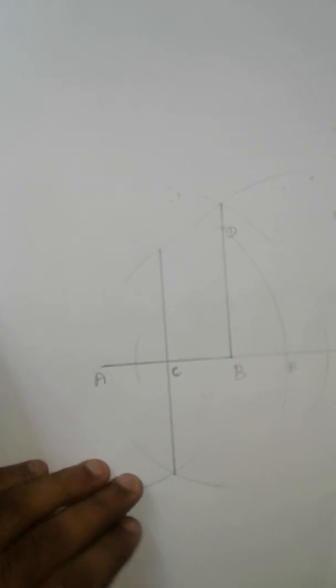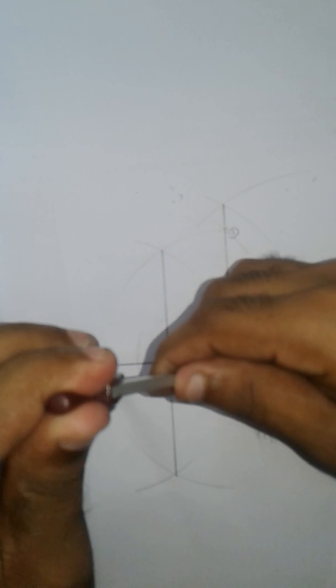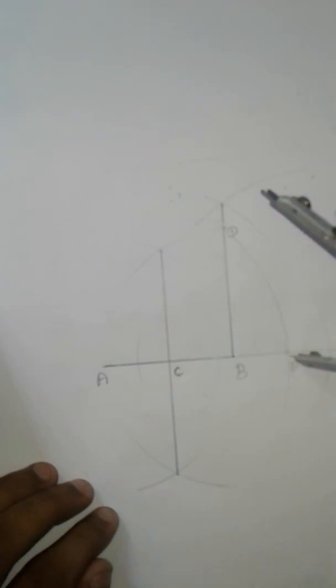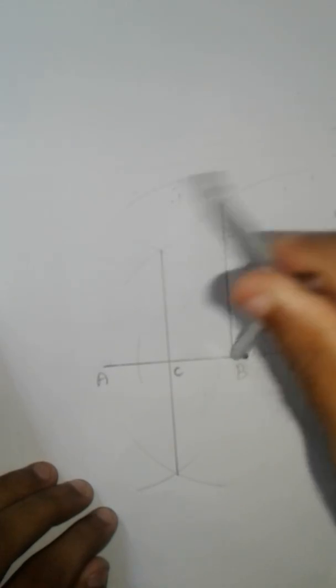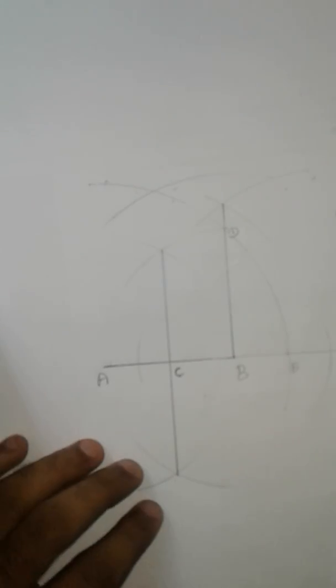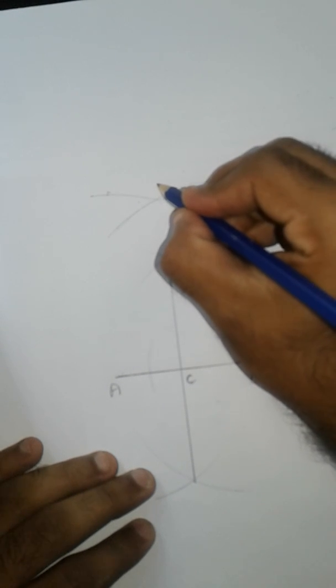Next, we draw two arcs with A and B as centers and AE distance as radius. We mark that intersection point as F.